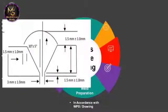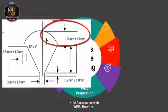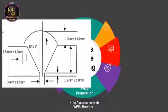Weld preparation dimensions should match the WPS. In this image you can see the weld preparation dimensions mentioned in the WPS. First, we will discuss cap height — it is mentioned as 1.5 mm with a tolerance of plus or minus 1 mm, meaning cap height should be between 0.5 mm and 2.5 mm.